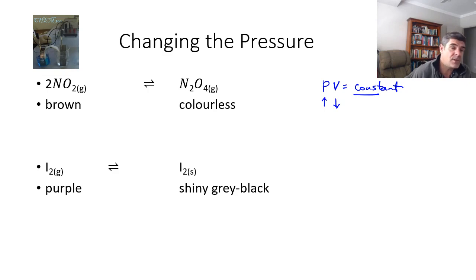If you want to increase the pressure of a system, an equilibrium system involving gases, the easiest way to do that is to decrease the volume and vice versa. Now of course we also know that concentration is equal to number of moles over volume, so therefore there is potentially going to be an effect of change in the concentration as well when we are making changes in the pressure. But let's just have a look at a couple of examples to see if we can understand how we might go about predicting changes in the pressure.